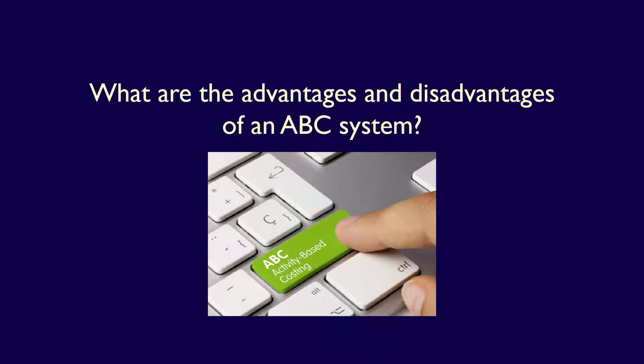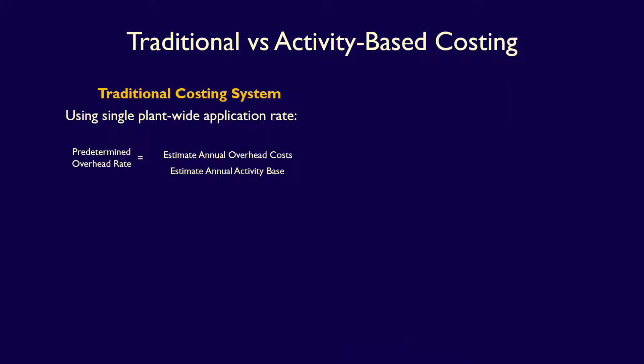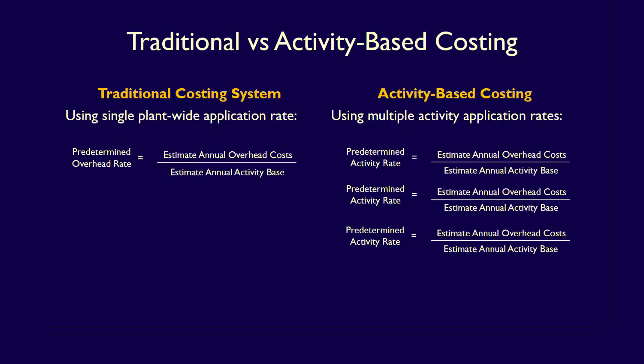Let's talk about the advantages and disadvantages of an activity-based costing system. Recall that under a traditional costing system, we use one plant-wide overhead rate to apply overhead to each manufacturing job. However, under an activity-based costing system, we use multiple activity rates to apply overhead.